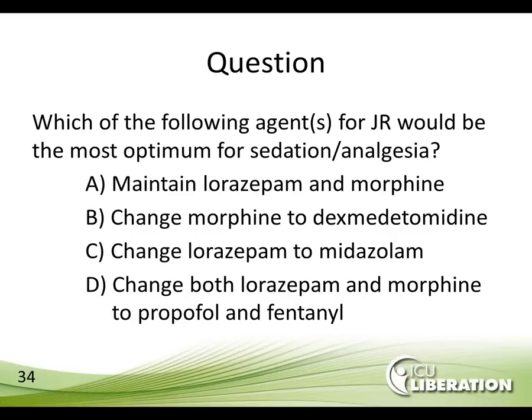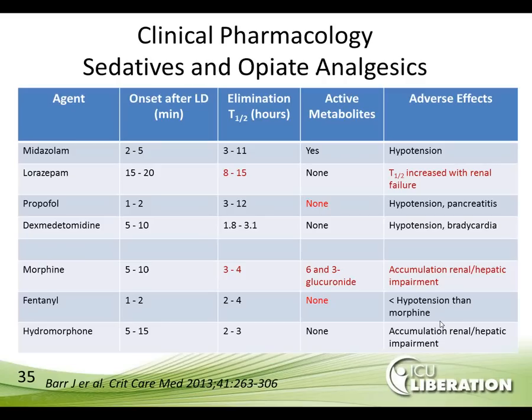Looking at clinical pharmacology from Dr. Barr in Critical Care Medicine — a table of opioid analgesics from diazolam to hydromorphone showing onset, elimination half-life, active metabolites, and adverse effects. Key points highlighted in red: lorazepam, given JR's creatinine of 2.7 and poor creatinine clearance, has an elimination half-life of 8-15 hours under normal renal function that increases significantly in renal failure. Lorazepam also contains large amounts of propylene glycol, potentially causing lactic acidosis. Propofol has no active metabolites and a half-life of 3-12 hours, with some patients waking within 15 minutes of discontinuation, though adverse effects include hypotension and pancreatitis.